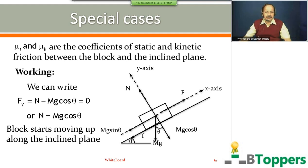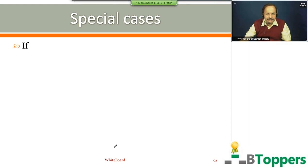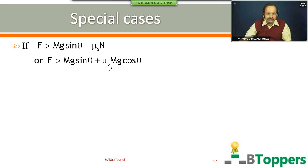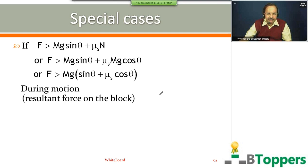Block starts moving up along the inclined plane if F is greater than mg sin θ plus νs times N. Substituting N equal to mg cos θ on the right side, F is greater than mg sin θ plus νs mg cos θ, or F is greater than mg(sin θ + νs cos θ). During the motion, the resultant force on the block equals Fx, the x-component: that is F minus mg sin θ minus fk.